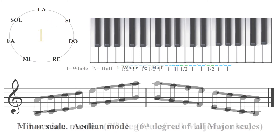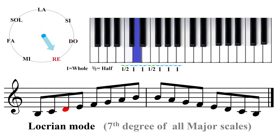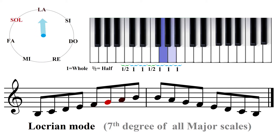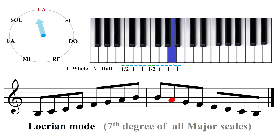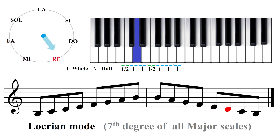And last, we move up to the seventh degree of Do major, and we find the Locrian mode, starting on Si. Si, Do, Re, Mi, Fa, Sol, La, Si. Si, La, Sol, Fa, Mi, Re, Do, Si.